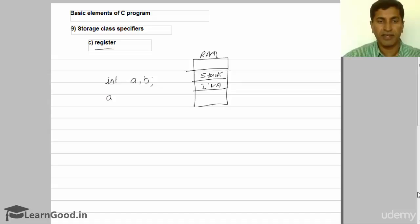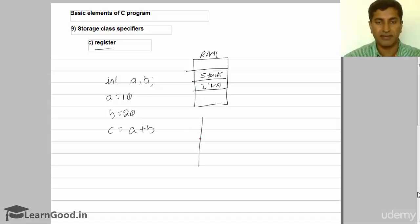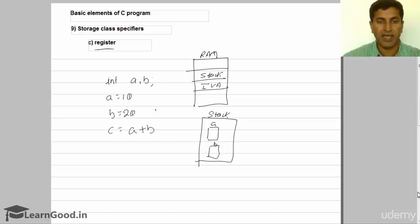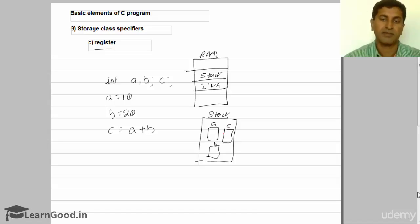Now if you have a value a equal to 10 and b equal to 20, and an expression c equals to a plus b within a program, this a and b will be present inside the stack area. So 22 bytes will be allocated in the stack area. And since c has also been declared as a local variable, c is also occupying some stack area.